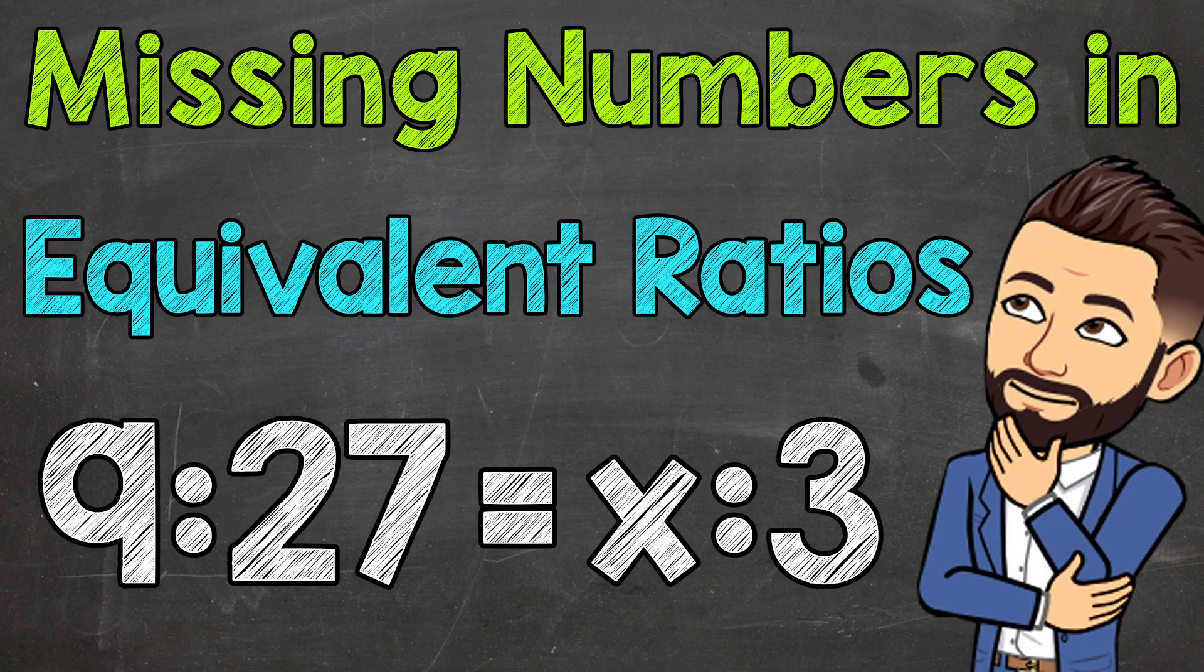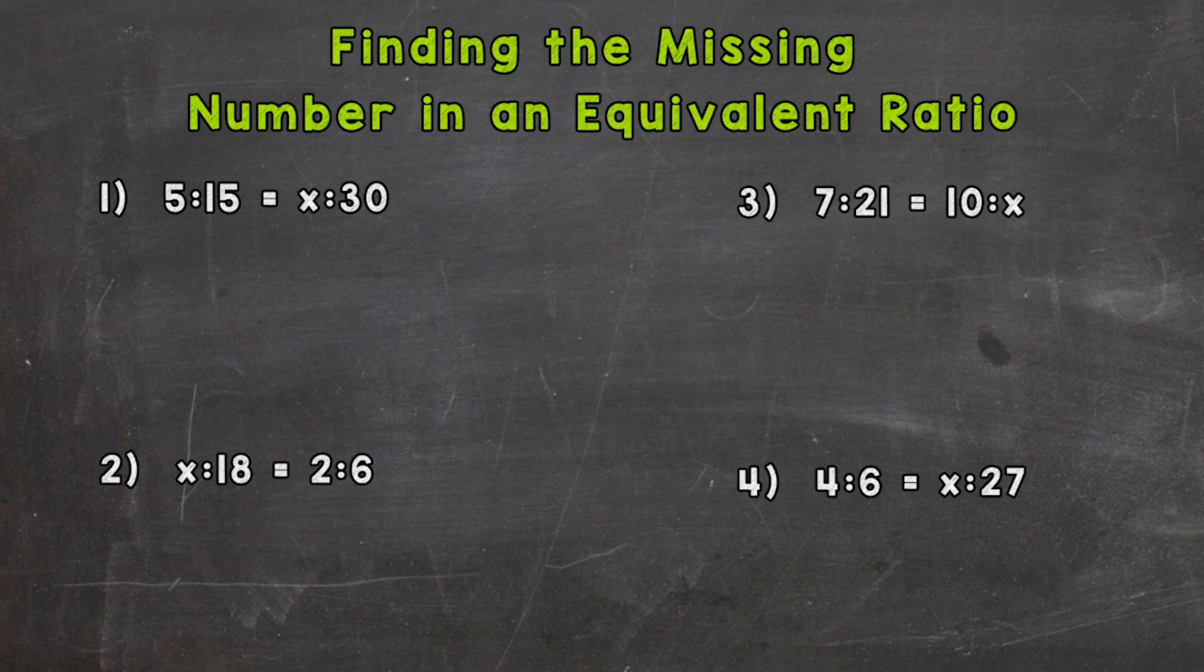Welcome to Math with Mr. J. In this video, I'm going to cover how to find the missing number in an equivalent ratio. As you can see on your screen, there are four examples we're going to go through together.